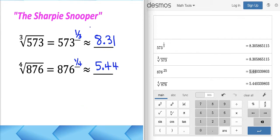All right. That's it, students. You've got to fill in the blank. A third root is a one third power. A fourth root is a one fourth power, and so on and so forth. And then calculate that, round to the nearest hundredth and then you win the game. All right. That is the Sharpie Snooper. See you in class.